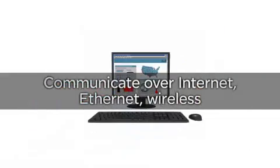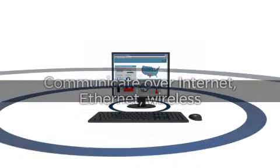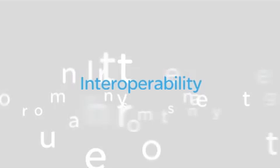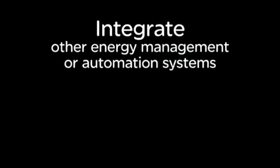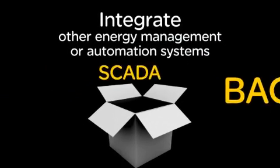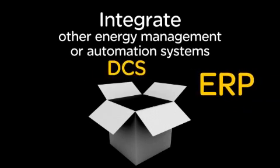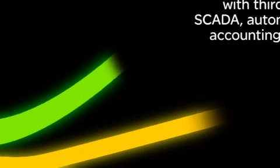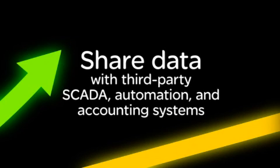Quickly communicate information over the Internet, Ethernet, or wireless. Ion Enterprise allows you to integrate with other energy management or automation systems, such as SCADA, BAC, DCS, or ERP. You can share data with third-party SCADA, automation, and accounting systems.